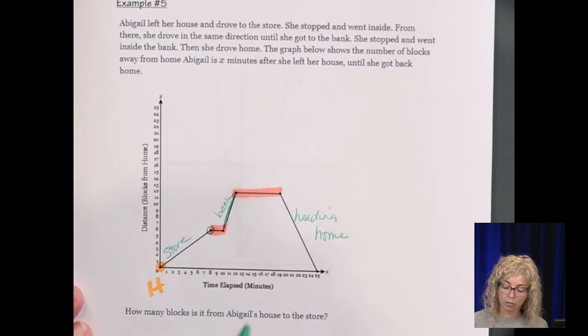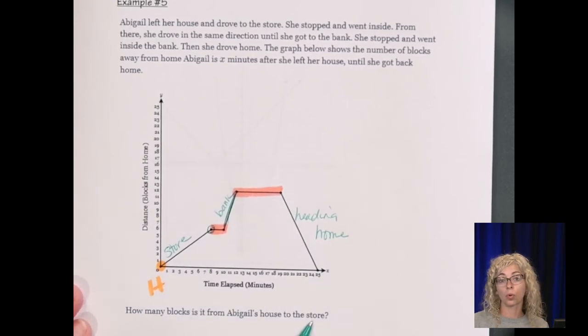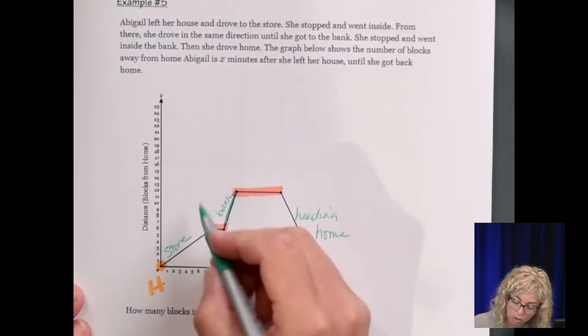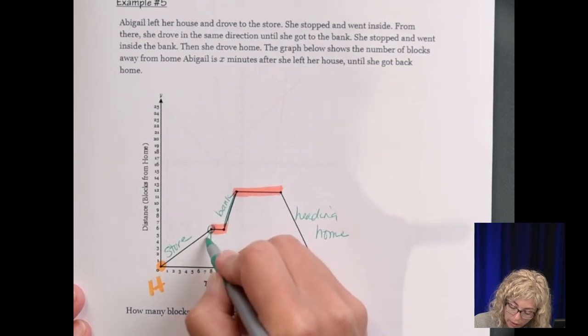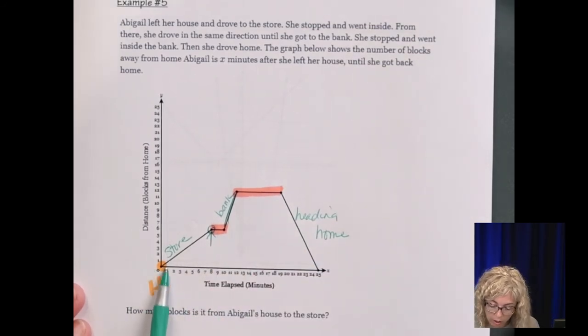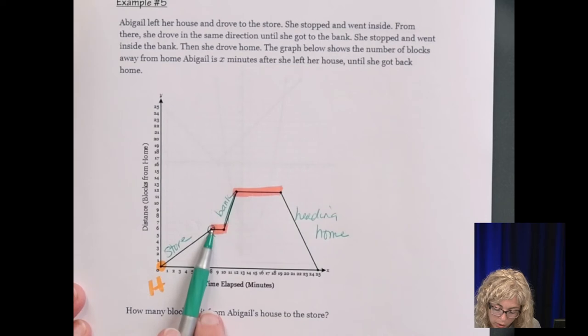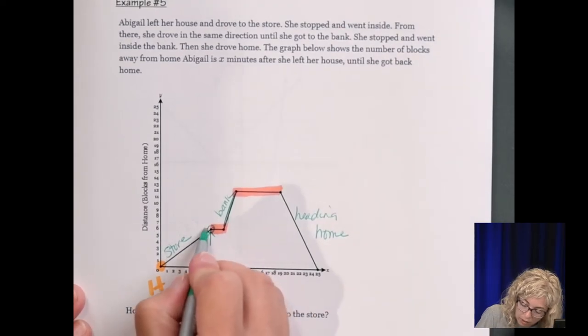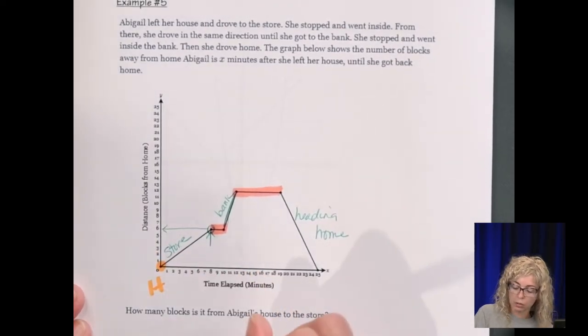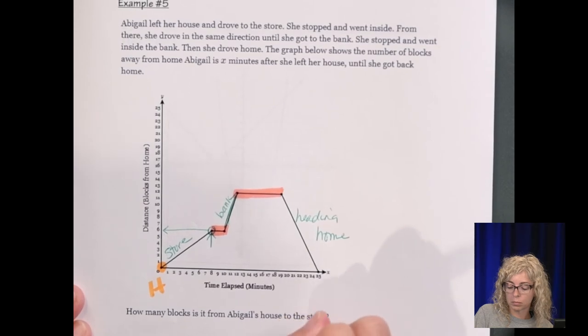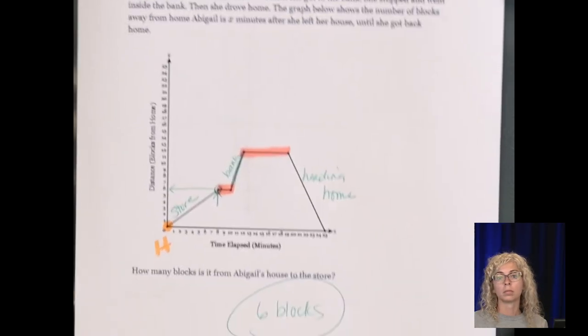How many blocks is it from Abigail's house to the store? So from here she arrived at the store. It took her eight minutes to get to the store. And this is follow it over. Six blocks from home.